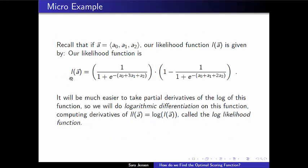And what that's going to do for our likelihood function, we're going to denote the A vector to be these coefficients A0, A1, and A2 in our scoring function.